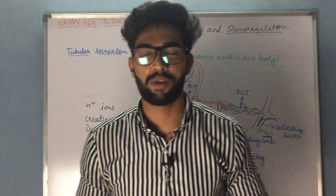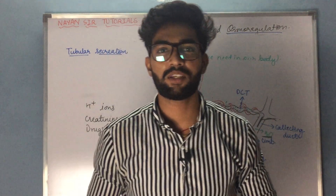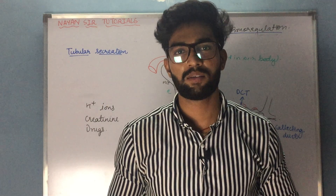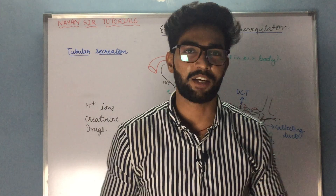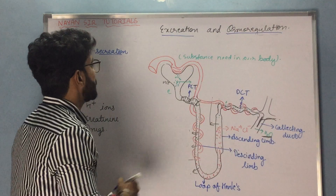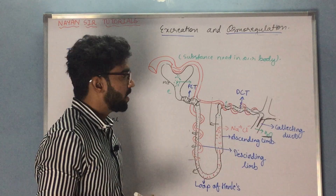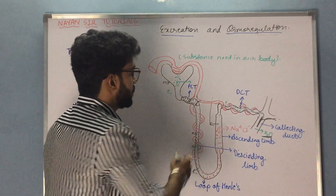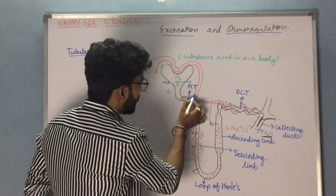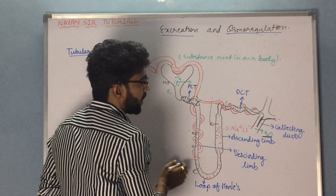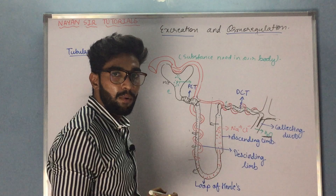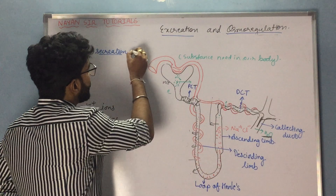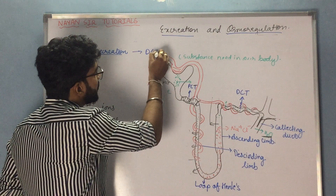Hello guys and welcome to NANSA tutorials. In this video lecture we'll learn about the third and last process of urine formation, that is tubular secretion. Tubular secretion takes place with the help of peritubular capillaries — you can see these are the peritubular capillaries, which are forming from the efferent arterioles. One important thing to note is that tubular secretion mostly takes place in the DCT, that is the distal convoluted tubule.